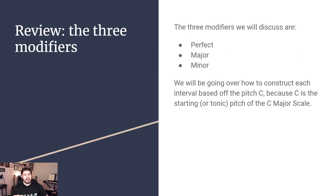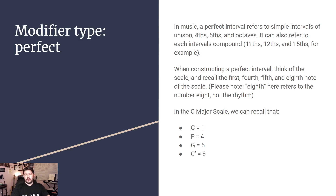Moving on, we are going to talk about the modifiers we are going to be using: perfect, major, and minor. We're going to base this off of the pitch C because it is the starting — or tonic — pitch of our C major scale. We begin with the perfect interval. This is going to refer to simple intervals of the unison, fourth, fifth, and octave. It also refers to the compounds, so that would be the 11th, 12th, 15th, and so on. When constructing the perfect interval, you're going to think of the C major scale and recall the first, fourth, fifth, and eighth note of the scale. Please note that eighth refers to the number eight, not the rhythm — we are not talking about eighth notes, we are talking about the eighth note in the scale.